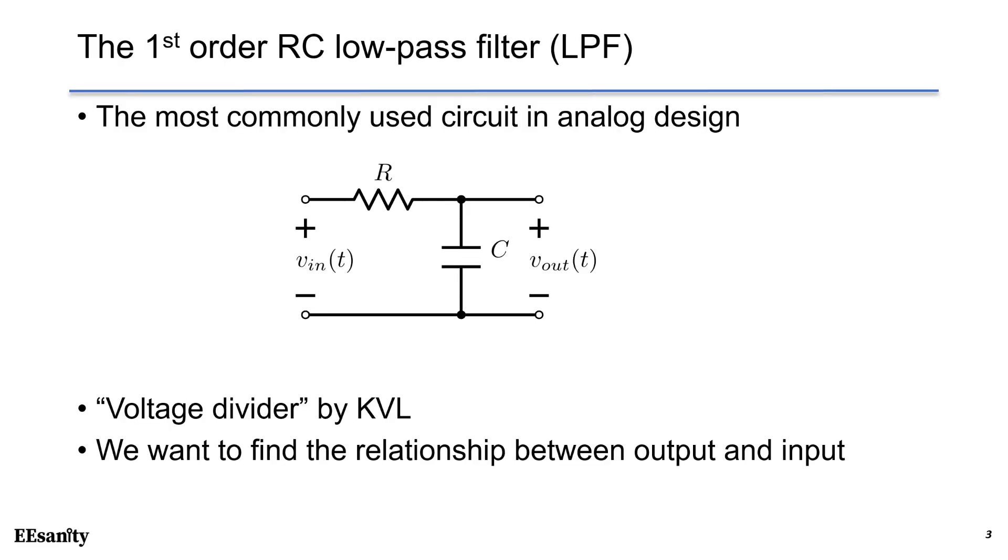This is the first-order RC low-pass filter, short name LPF. This is the most commonly used circuit in analog design because it's very low cost and effective. We have R and C to build an RC filter. We have input voltage across two components R and C in series, and output voltage across the capacitor. R and C are building a voltage divider based on KVL. We want to understand the relationship between output and input.